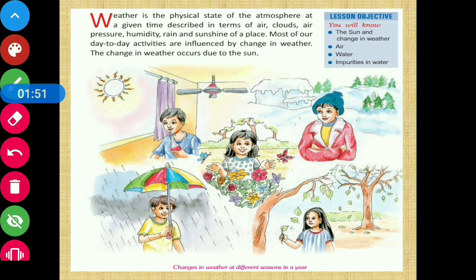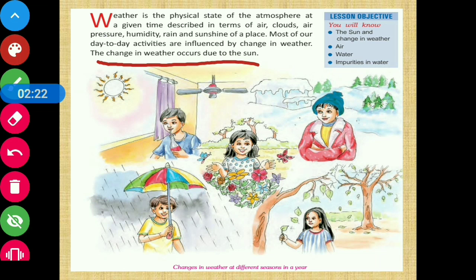Most of our day-to-day activities are influenced by change in weather. The change in weather occurs due to the sun. हमारे day-to-day activities बहुत जादा प्रभावित होते हैं — अगर थंडी जादी है तो हम woolen clothes पहनेंगे, या बहुत जादा गर्मी हो रही है तो हम fan on करेंगे। Weather change का कारण sun है।